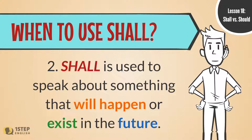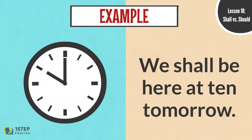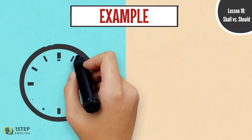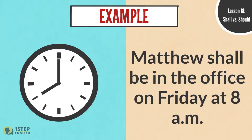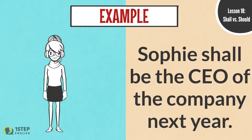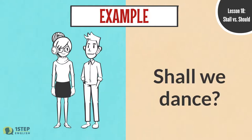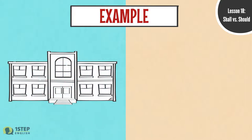Number two, shall is used to speak about something that will happen or exist in the future. For example: We shall be here at 10 tomorrow. Sophie shall be the CEO of the company next year. Shall we dance?